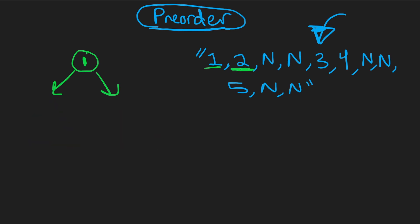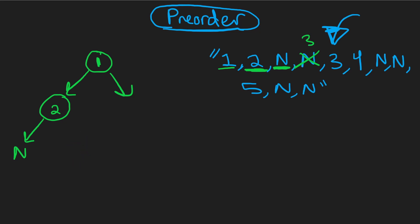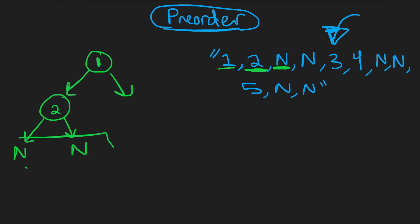The first value is the left child — if it were null we'd put null there, but it's not, so we create a two node and recursively create its subtree. The first value for two's subtree is the left child — it's null, so we can't continue that subtree. Whatever value comes next is the right subtree of two — it's also null. Since both children were null, we're done creating that entire subtree. We reached our base case.